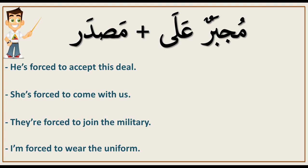After it, you add masdar. Masdar, as we said before, means the noun that comes from the verb — the noun of the verb. The difference between masdar and verb is that the verb is related to a tense, related to time. But masdar is not related to time.